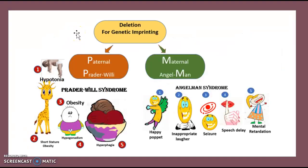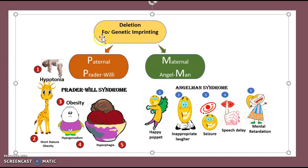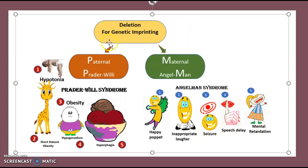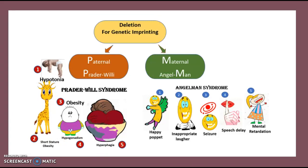A quick overview: it's a deletion causing genetic imprinting, and we've got to figure out which side it's coming from — the mother's or the father's. If it is maternal, it's going to be Angelman syndrome: the person is going to be very happy and cheerful, with inappropriate laughter, seizures, most likely speech delay, and intellectual disability. If it is coming from the father's side, it is Prader-Willi syndrome: more physical — hypotonia, short stature, obesity, hypogonadism, and hyperphagia.